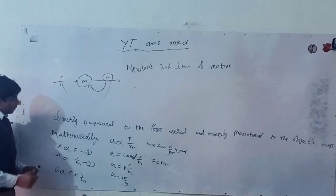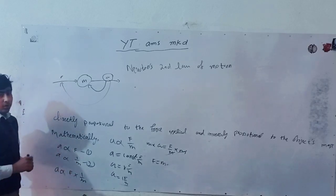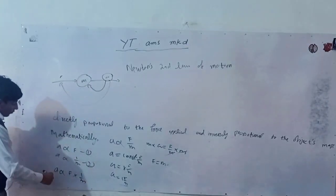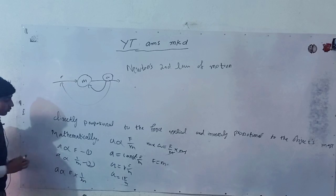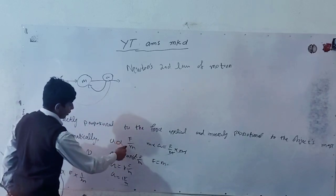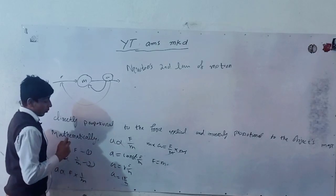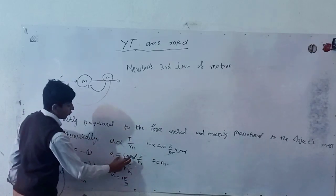But with the mass, there is inverse relation of acceleration. If the mass is increased, then the acceleration will decrease. So if we combine both of these equations, because they are both for acceleration, we get acceleration is directly proportional to force and inversely proportional to its body's mass.